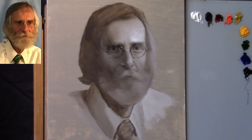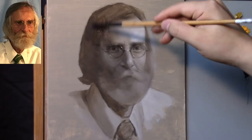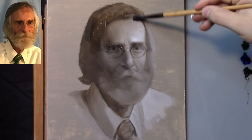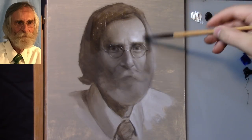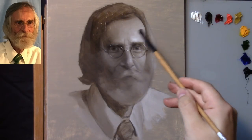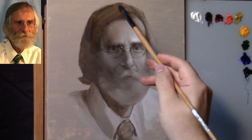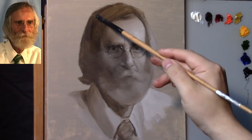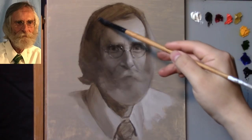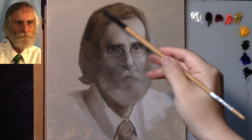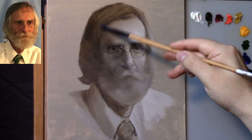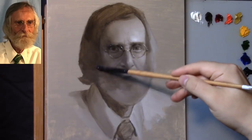Last week the underpainting was created just using lead white and raw umber. We did a preliminary drawing, transferred it, and then created the underpainting — a link to that video will be given in the description box below. Now we're going to start off with our medium, Neo McGilp, and I'm just rubbing it on the surface to bring back some of the dark tones of the painting.